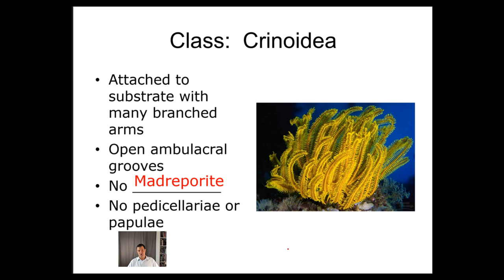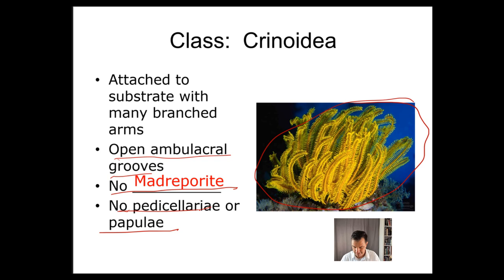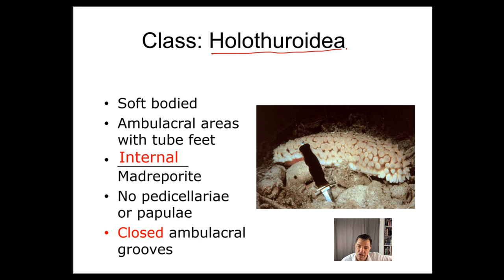Then we have Class Crinoidea. The Crinoidea are deep sea or bottom-dwelling ocean organisms with branched arms. They have open ambulacral grooves, but no madriporite, no pedicellaria, and no papulae. They're really a suspension feeder — they catch things falling in the water column as currents move nutrients around. They're not predators like some of the other groups.